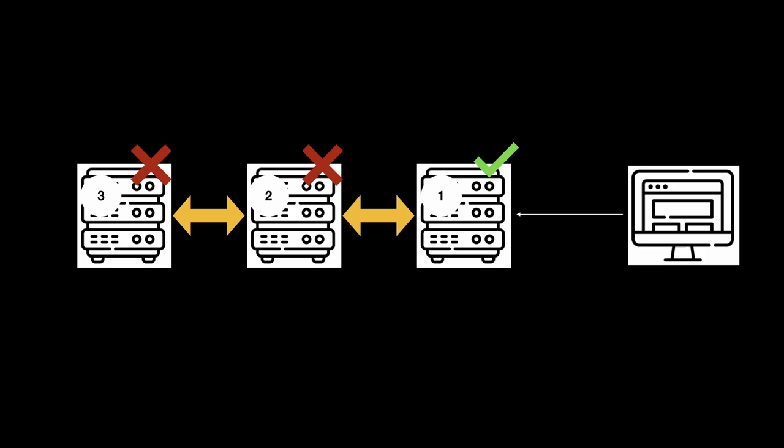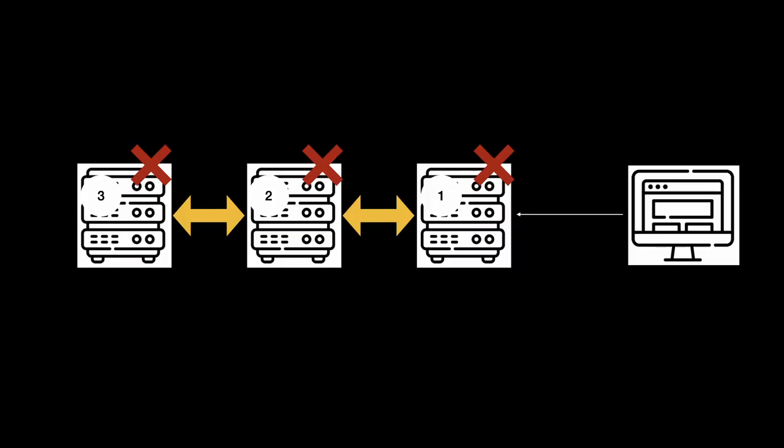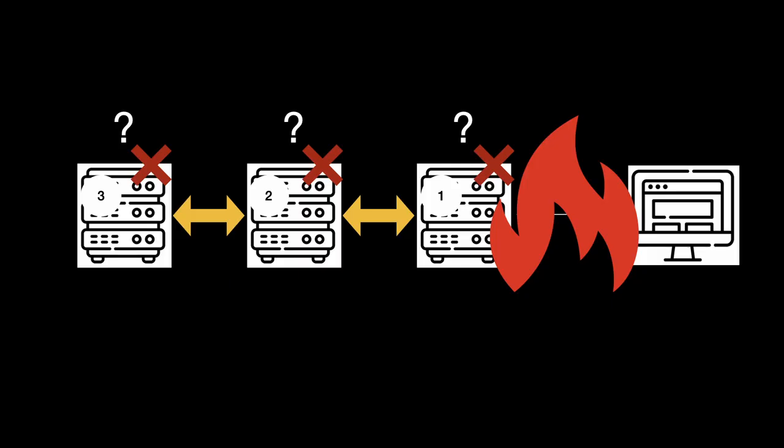It hangs and it waits for the response. While that service is hanging, additional requests are continuing to come in and everything is queuing up. So service one starts to queue up, service two starts to queue up, service three still isn't responding, and eventually what you get is a cascading effect where all three services are down. In this scenario it would become incredibly difficult to figure out which one of those services is actually having a problem.